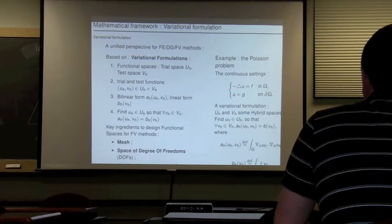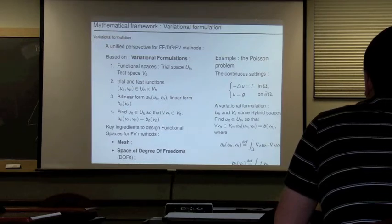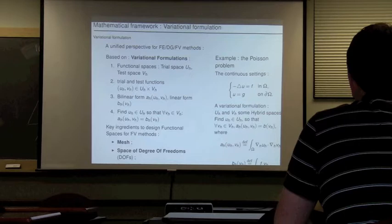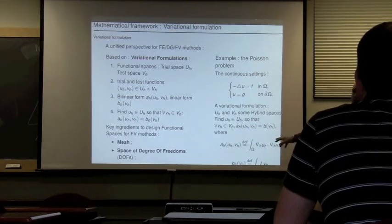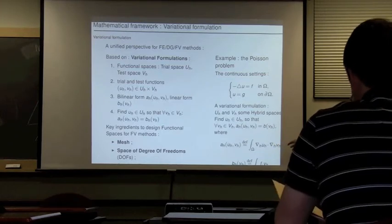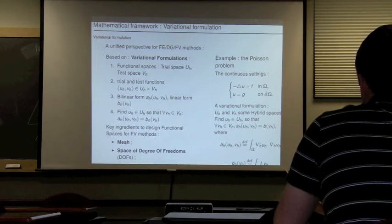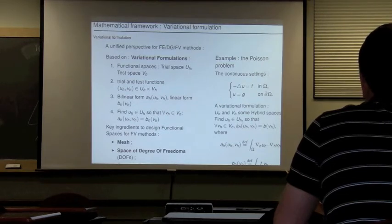The solution of a problem is the one for which, for every element of the test space, we have equality of a bilinear form AH(UH, VH) = LH(VH). In mechanics this is the variational solution — we have equilibrium if for every test displacement we still have equilibrium. The classical example is the Poisson problem: the weak formulation defines an energy form integrated over the domain, integral of grad(UH) · grad(VH) = RHS.